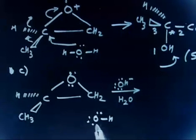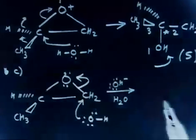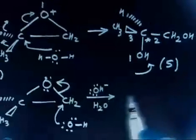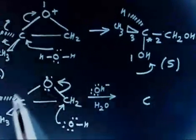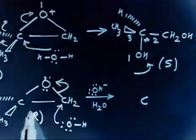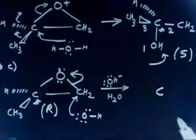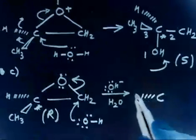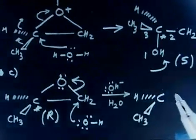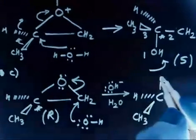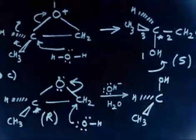OH⁻ is going to attack on this primary carbon. If it attacks on this carbon, I have to open this side. The configuration of this carbon — which was initially R — will remain the same as it was before. So you will have hydrogen here and CH₃ here. Writing the final product after taking H⁺ from water.